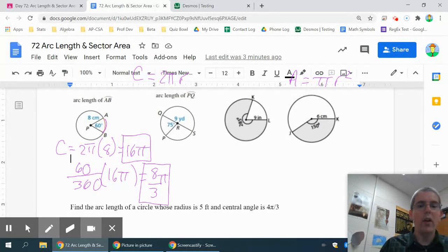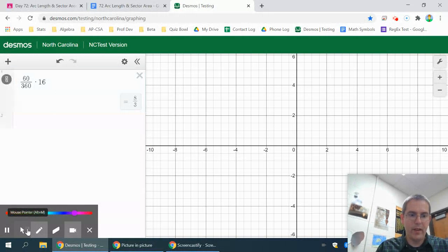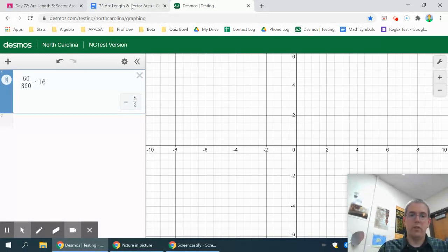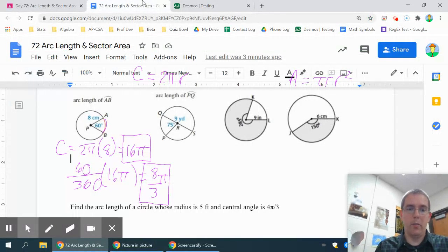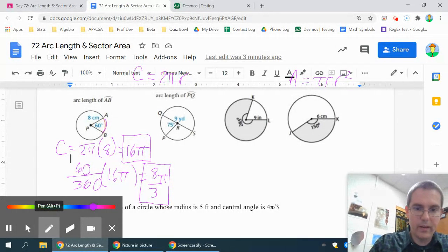If you wanted the decimal, of course, you could type the π in Desmos beside that. And then it would give you a decimal value of 8.37. But in this case, we wanted it in terms of π, so 8 thirds π is the best way to go. The next one, you might want to pause the video and try it on your own. This one, though,